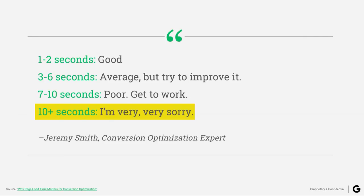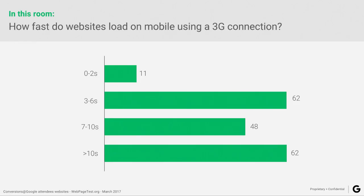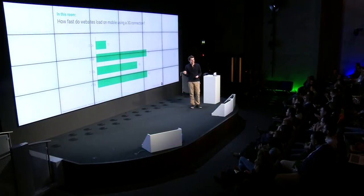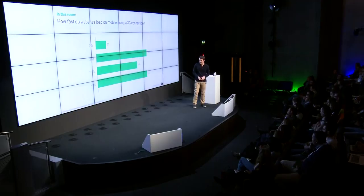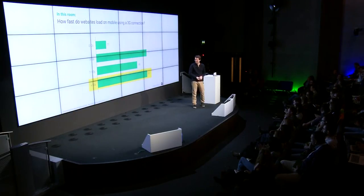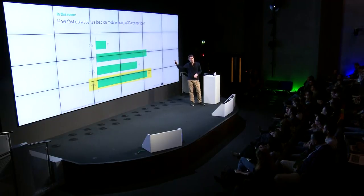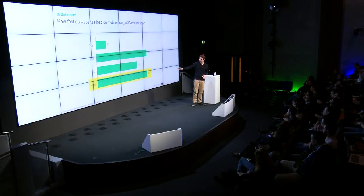Let's see how you guys stack up compared to this. This is the amount of websites that fall into each of the load time categories today. There are 11 websites that load in less than two seconds in this room — that's really impressive. Then 62 in the 3-to-6 range — that's way more, a big gap. Good news for those is you're really close to the 3-second milestone, so there are probably a couple of low-hanging fruits to leverage. 7 to 10: even more low-hanging fruits. 10 plus: I'm very, very sorry, but good news is there are probably small things you can implement in a matter of hours to get into the category above.